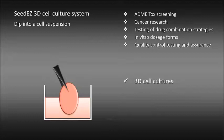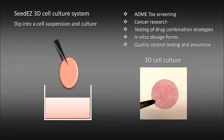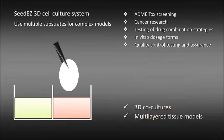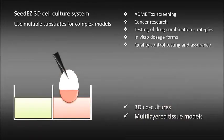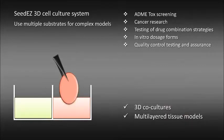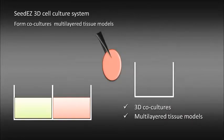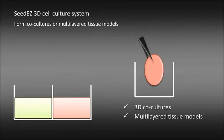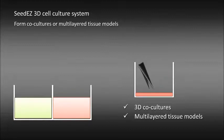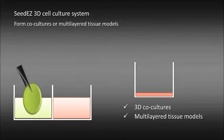Similar to spot cell seeding, with a wick or dip cell seeding method, you may seed one or more cell populations in the same SeedEasy substrate, or you may seed them in separate SeedEasy substrates and then stack to form co-cultures or multilayer tissue models.